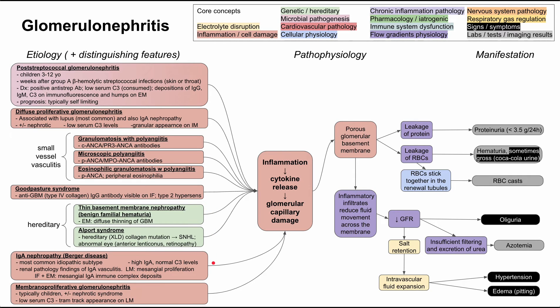IgA nephropathy, also called Berger disease, is the most common idiopathic subtype. Patients have high IgA and normal C3 levels. On light microscopy, findings include mesangial proliferation, and on immunofluorescence and electron microscopy there are mesangial IgA immune complex deposits — similar findings to IgA vasculitis.